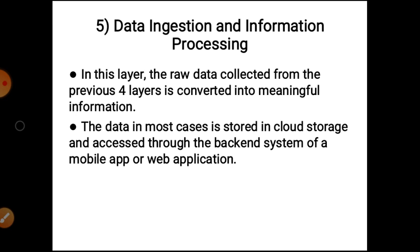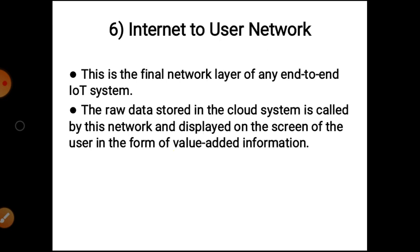Next layer is internet to the user network. This is the final network layer of any end-to-end IoT system. The raw data stored in a cloud system is called by this network and displayed on the screen of the user in the form of value-added information. The protocols generally used for accessing data from cloud storage systems are internet, Ethernet, and Wi-Fi.